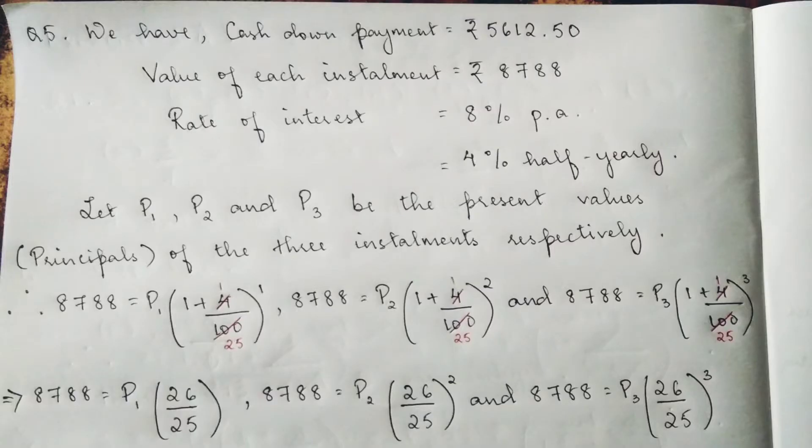And after this, we will solve 4 by 100 which is 1 by 25. You find the LCM, it becomes 26 by 25.